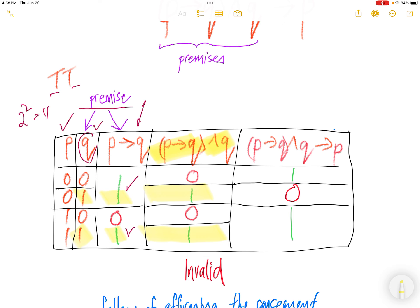Now, we also want to look at the conclusion. Conclusion is P. Look for when the premises are true and then the conclusion is false. The premises are true and then the conclusion is false.